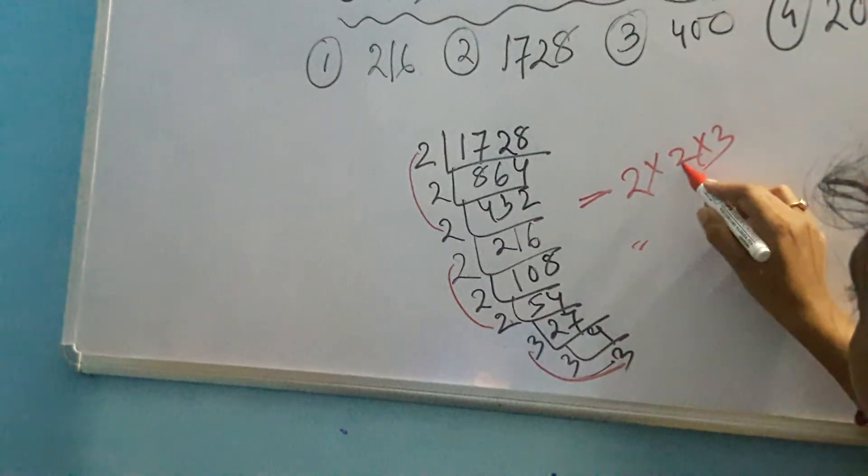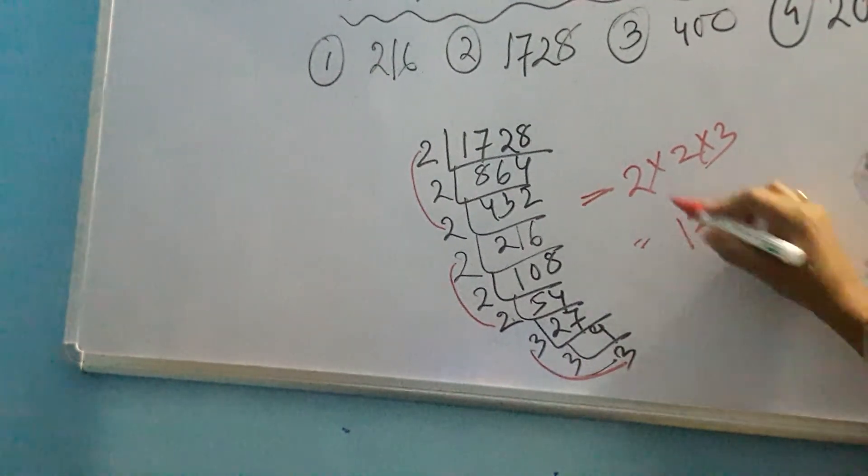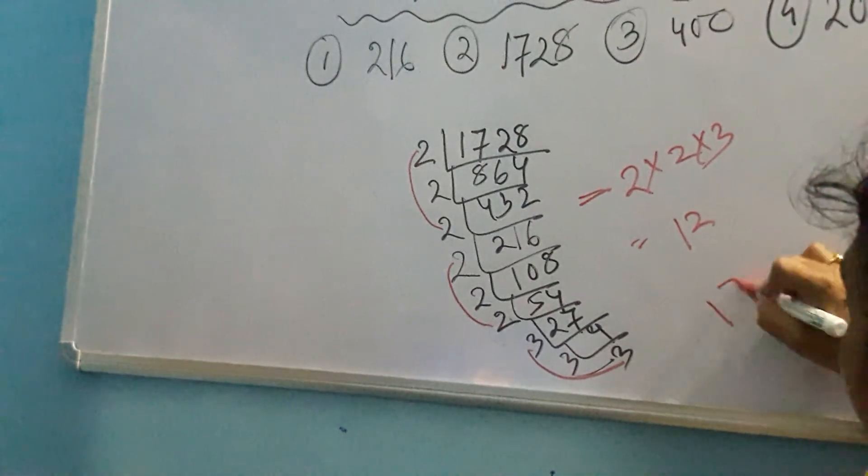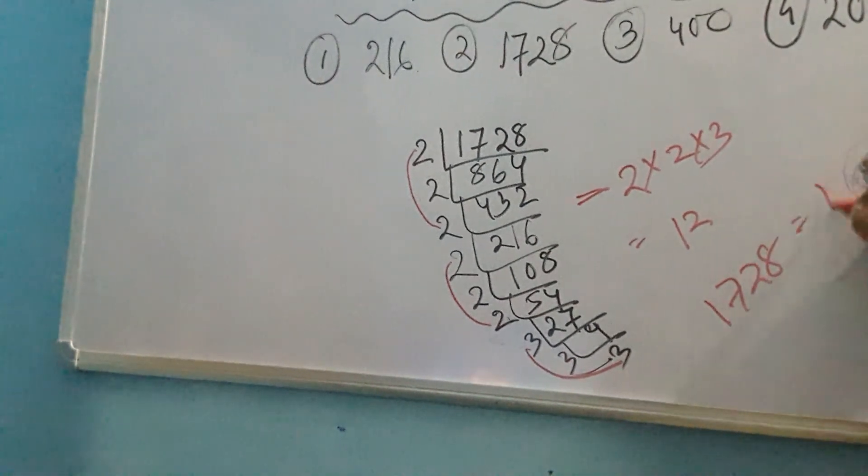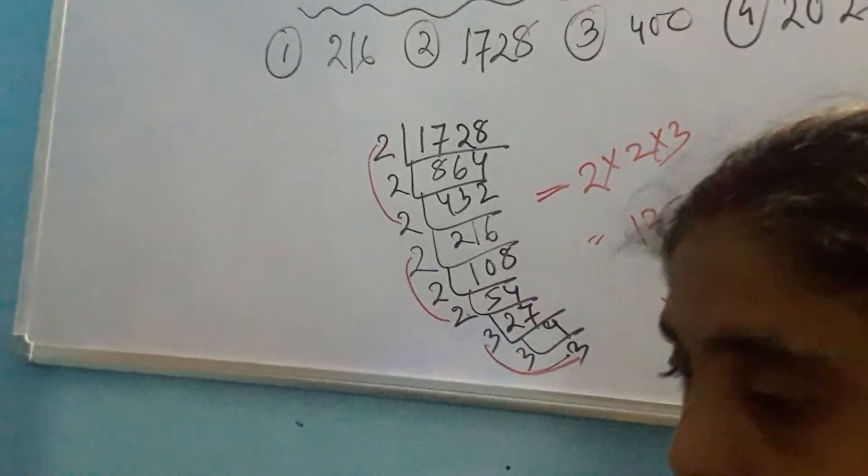So that is equal to 2 into 2 into 3. That means it is 2, 4, 2, 2 is 4, 4, 3 is 12. So 1728 is equal to 12's whole cube.